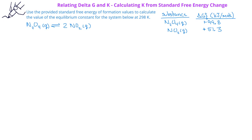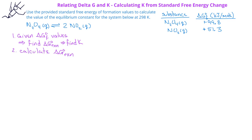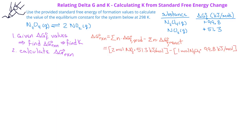To begin this problem, we recognize that since we're given the standard free energy of formation values, we can find the standard free energy change for the reaction, and from there we can calculate the value of the equilibrium constant. We'll begin by calculating the standard free energy change for the reaction, which equals the sum of the moles multiplied by the standard free energy of formation values for the products minus the reactants. When we plug in the values, we get 2 moles of NO₂ multiplied by 51.3 kJ per mole for the products, minus 1 mole of N₂O₄ multiplied by 99.8 kJ per mole for the reactants. This gives us 102.6 kJ minus 99.8 kJ, so the standard free energy change for this reaction is 2.8 kJ.